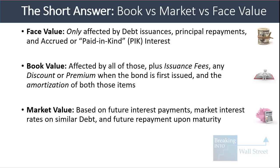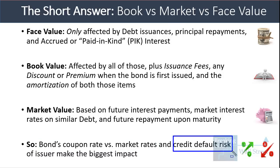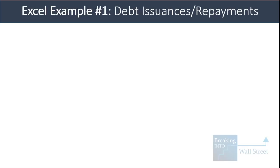The market value of a bond is based on future interest payments, market interest rates on similar debt, and the future repayment upon maturity. In practice, the bond's current coupon rate versus market rates on similar issuances and the credit default risk of the issuer make the biggest impact. Credit default risk plays more of a role if the company is distressed or there are doubts about its business viability.